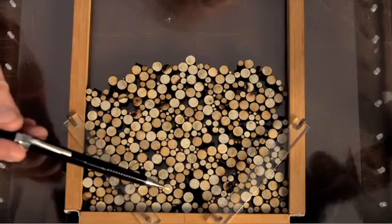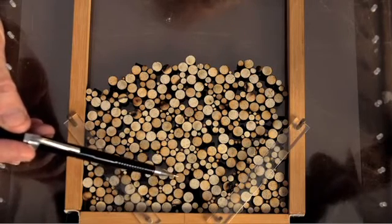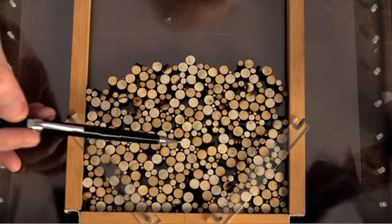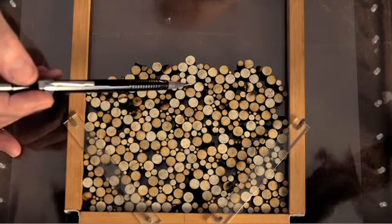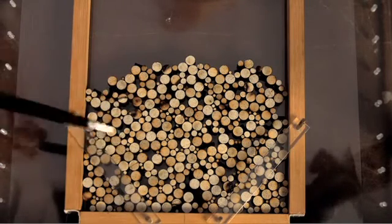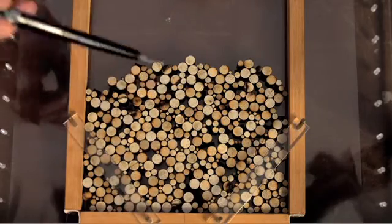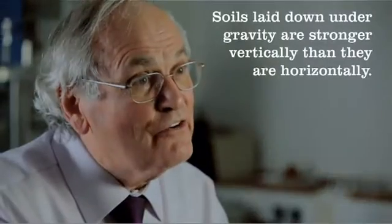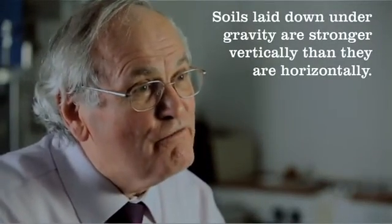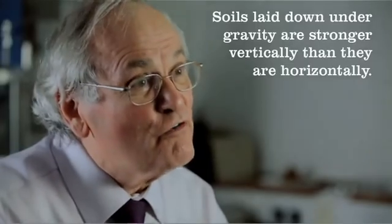You can see these near vertical columns and they are very important because it means the soil is stronger in the vertical direction than the horizontal direction. And that's because this has been deposited under gravity. Gravity acts vertically. A soil deposited under gravity is stronger vertically than it is horizontally.